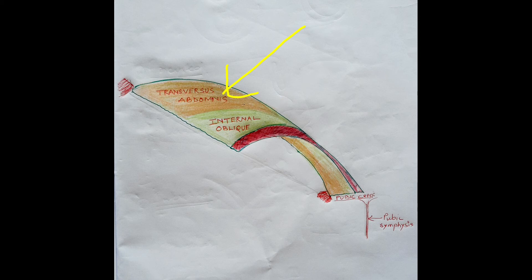The tendon is inserted into the medial side, in the pubic crest and in the medial part of the pecten pubis.